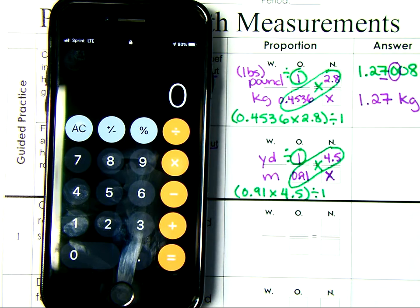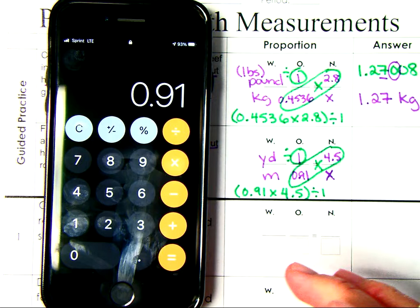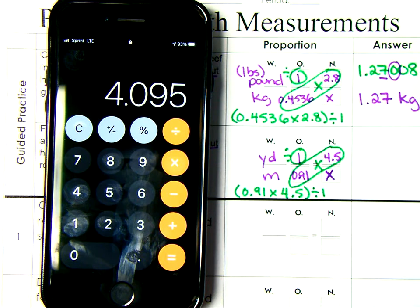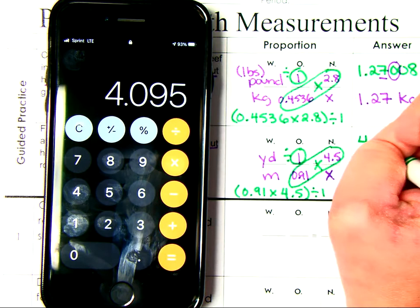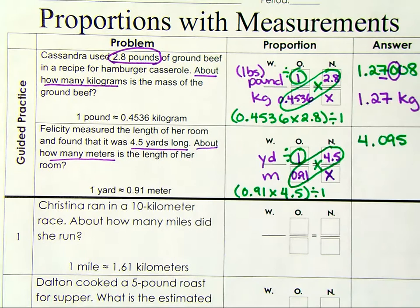So if you forgot how to multiply and divide with decimals, just make sure you look at your notes or ask your teacher to help you out. So if you want to try these without a calculator and then check with the calculator, that would be good too. So we have 0.91 times 4.5. So my product is 4.095. If I divide by 1, I get 4.095.